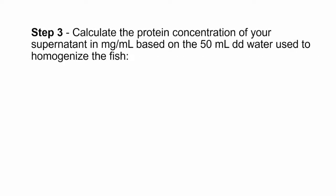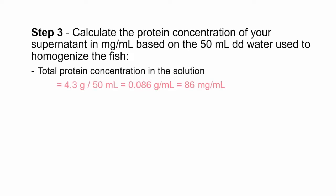Afterwards, you will need to calculate the protein concentration of your supernatant in milligrams per milliliter based on the 50 milliliters of DD water used to homogenize the fish. In this example, the supernatant protein concentration was 4.3 grams per 50 milliliters, which can also be written as 0.086 grams per milliliter, or 86 milligrams per milliliter after converting the units.